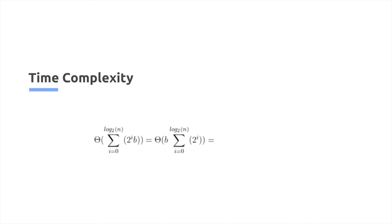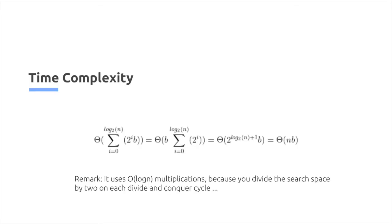2 to the power of log base 2 of n plus 1, b, which then becomes theta of n, b. We also perform a logarithmic amount of multiplication. So we went down to effectively linear time with logarithmic multiplications.